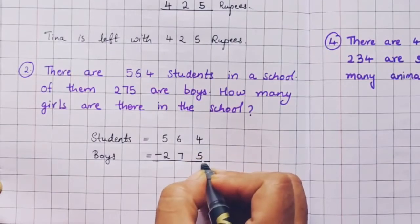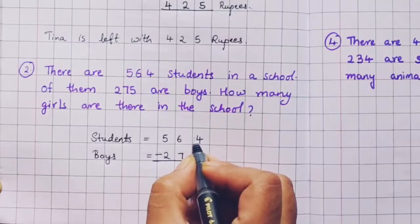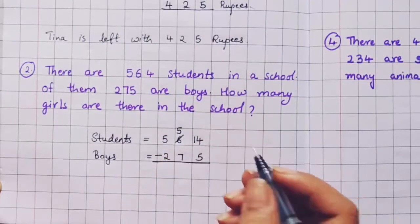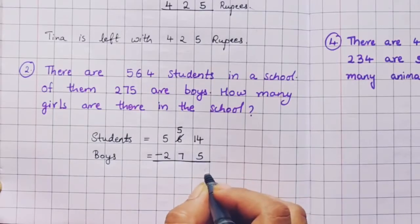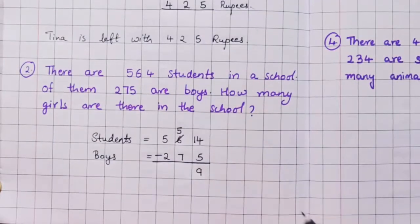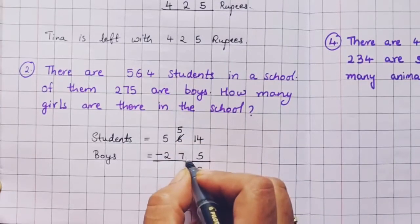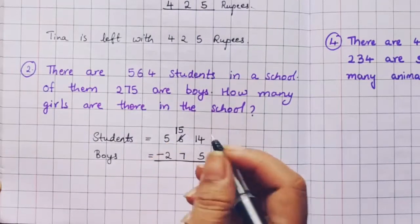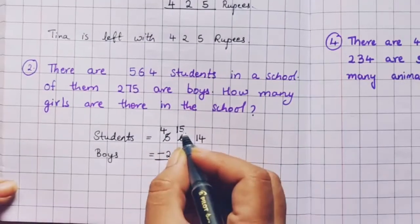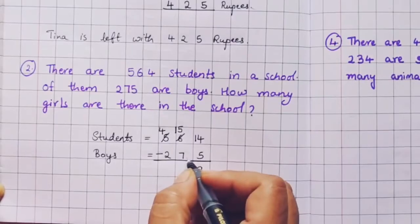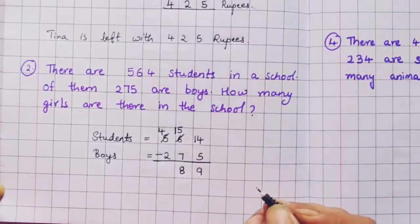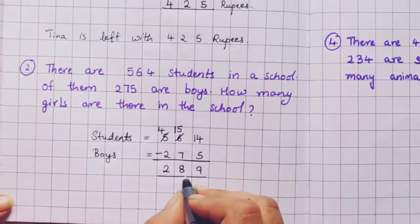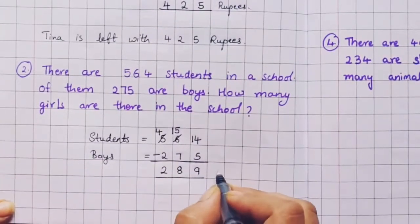From 4 we cannot remove 5, so we are going to borrow from the next number. So this becomes 14, and the tens digit cancels and becomes 5. Now 14 minus 5 is 9. From 5 we cannot subtract 7, so again we borrow from the next number, which becomes 4, and we get 15 minus 7 is 8. Now 4 minus 2 is 2. So the answer is 289.